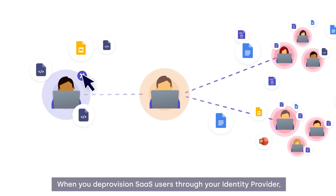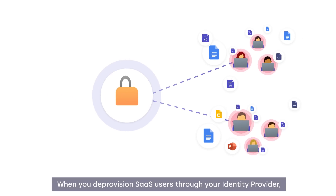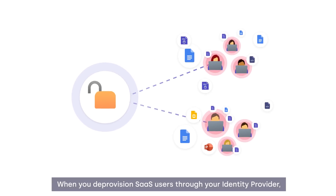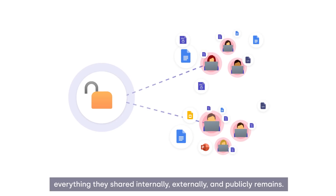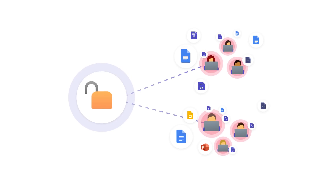When you deprovision SaaS users through your identity provider, everything they shared internally, externally, and publicly remains.